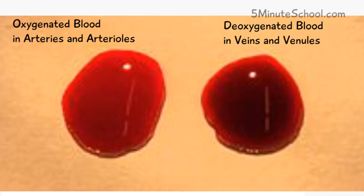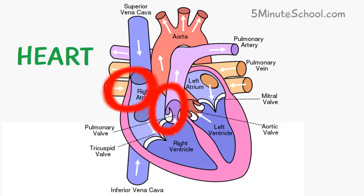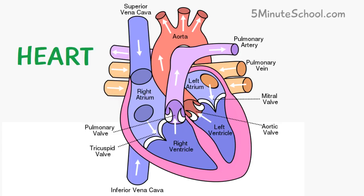Oxygenated blood inside arteries and arterioles is much brighter in color because of the oxygen. The last component of the circulatory system is the heart, which is a muscular organ and the powerhouse for the transport of blood. It's made from cardiac muscle and it contracts due to electrical signals from pacemakers located here and here — the sinoatrial node and the atrioventricular node. These electrical signals cause contraction of the heart muscle and force blood out.